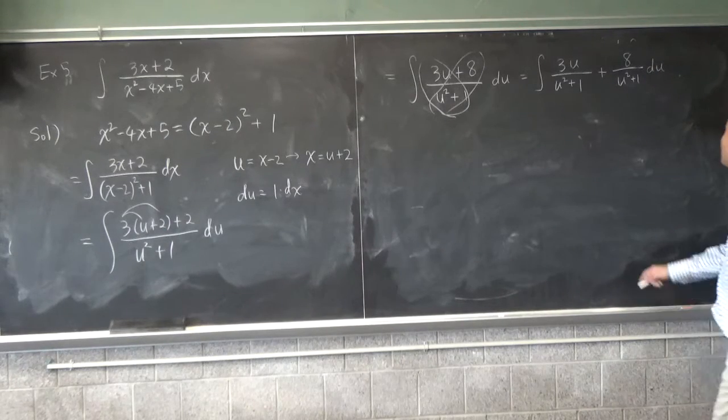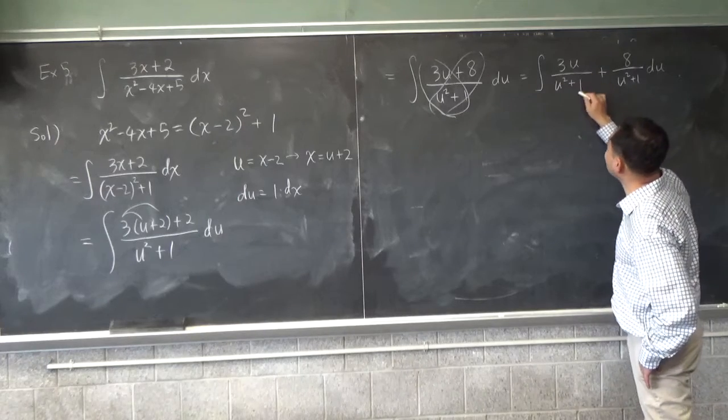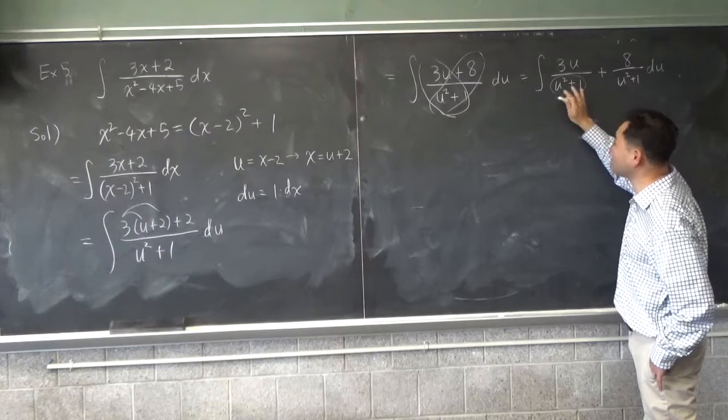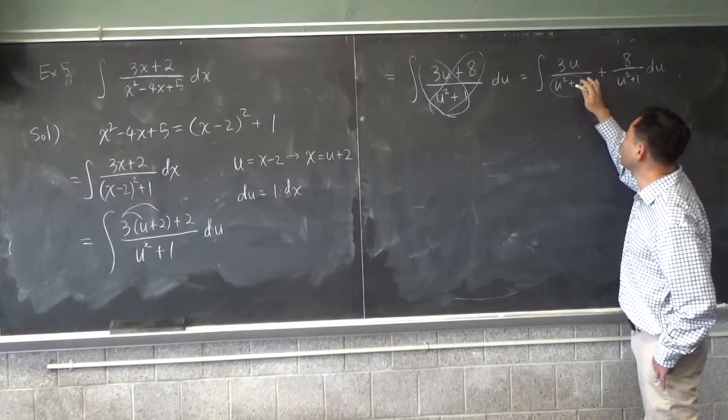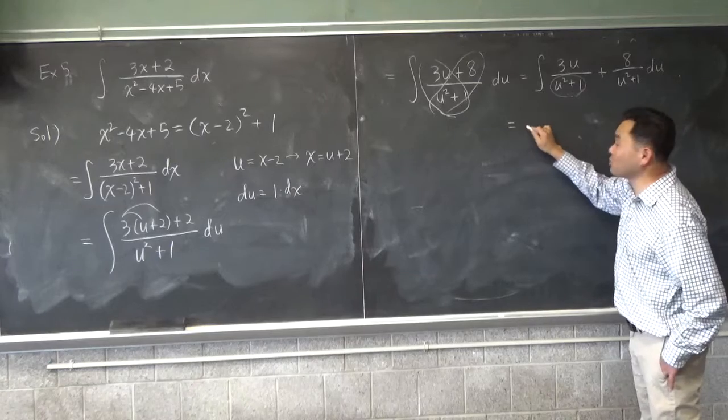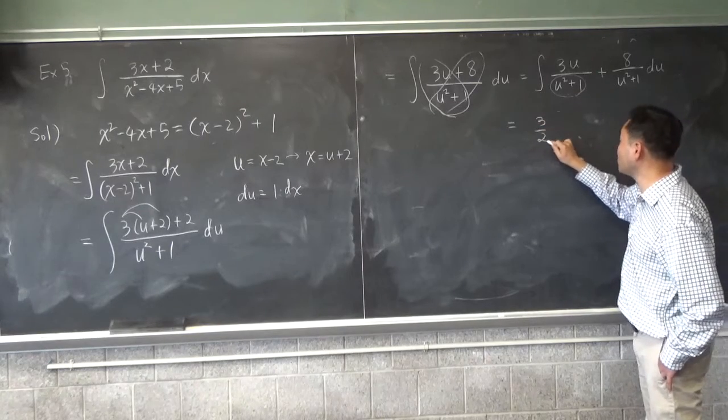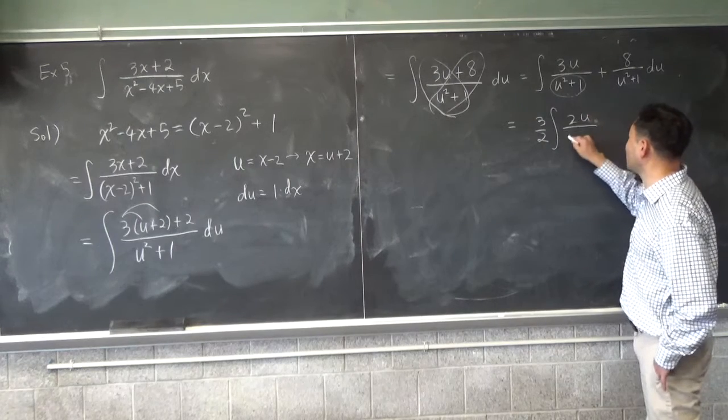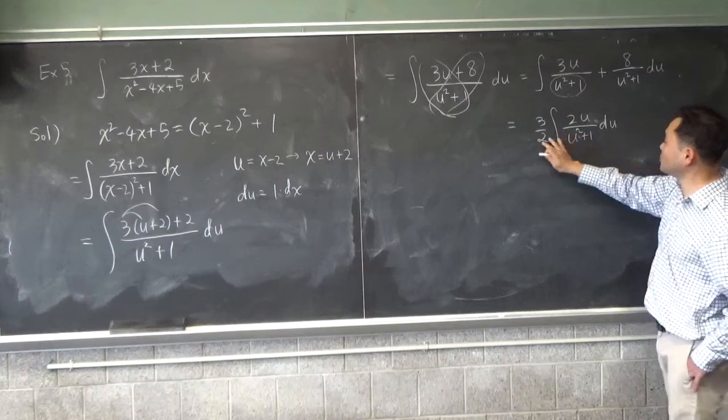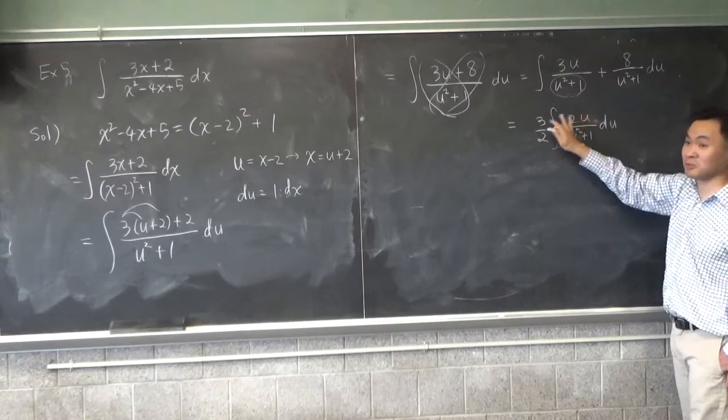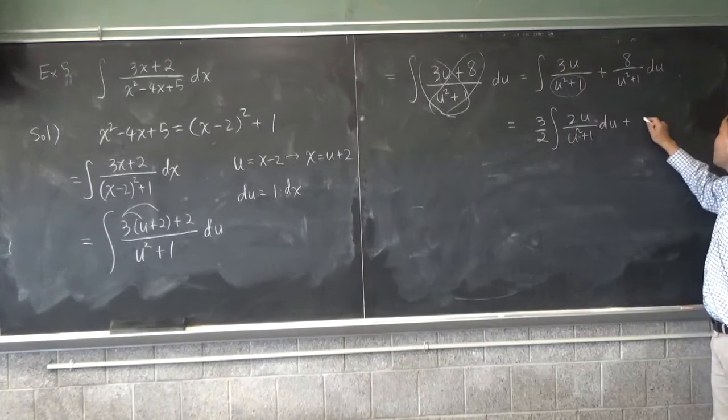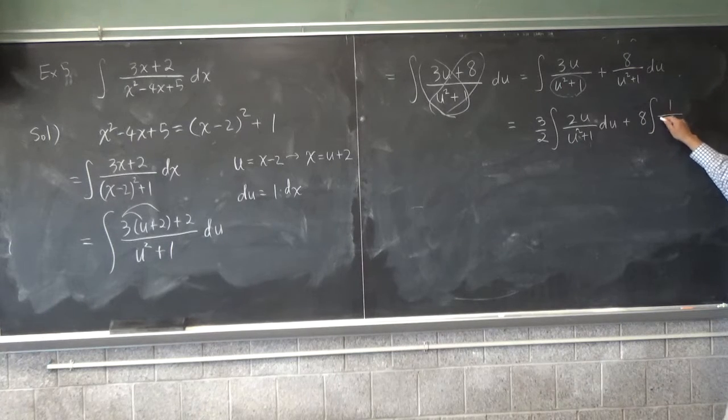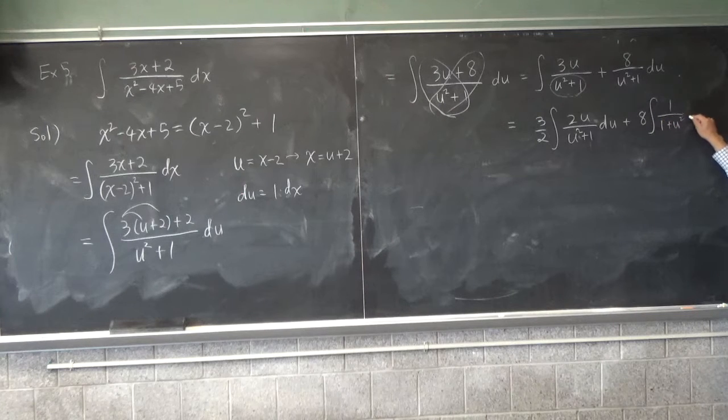And then how do you do this one? If you differentiate the denominator, you get 2u. But this is 3u. So what do we do? We put 3 over 2 integral of 2u over u squared plus 1. Right? When you multiply this, 2 and 2 will cancel and you get exactly the same thing as that one. Plus, you can factor the 8 out, and I want to switch these two around because that's the usual form.